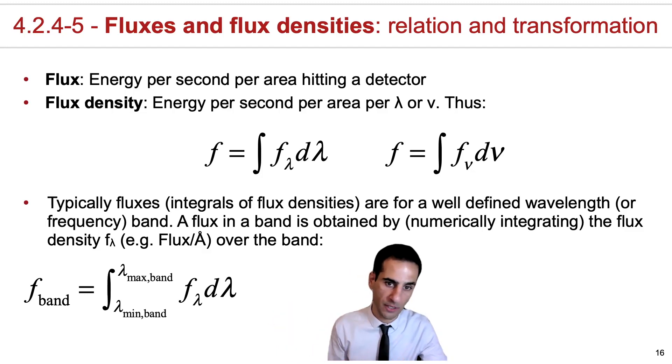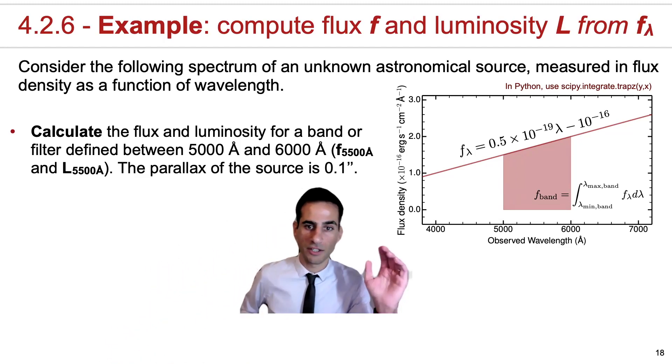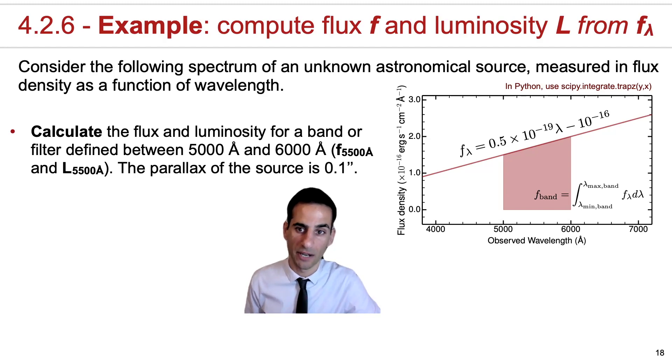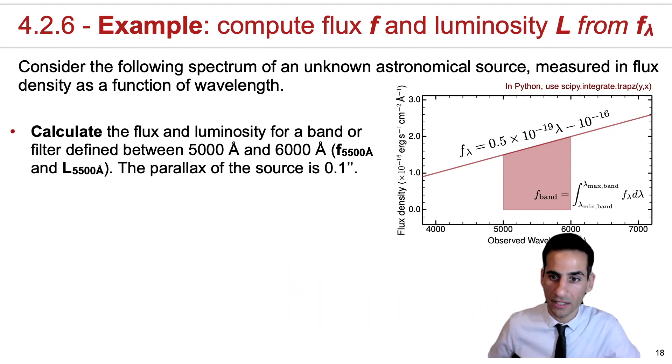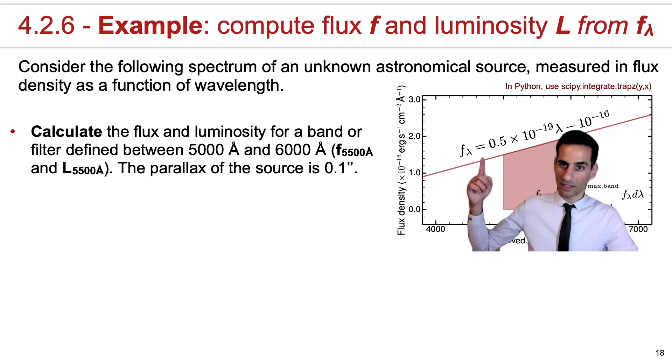Consider this following example. And again, you have all the details in the lecture notes with even further explanations in case I miss something, but do get in touch if there's something you don't understand. In this case, this example shows you a spectrum, and this is an analytical spectrum that I made up in Python. But the units of spectra are typically flux densities, in this case erg per second per centimeter squared per angstrom. This is a relatively simple spectrum, and this flux density is given as a function of lambda.